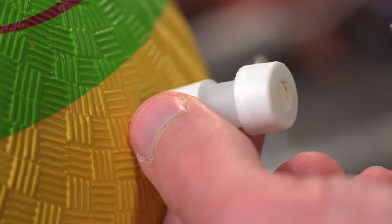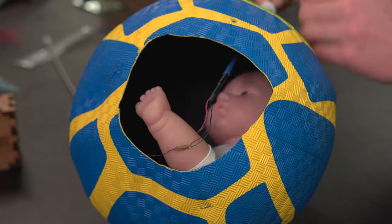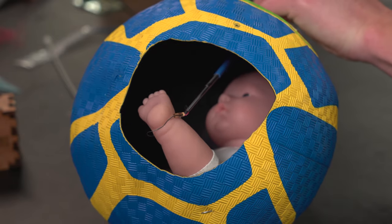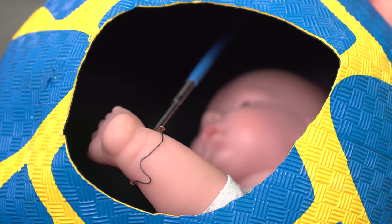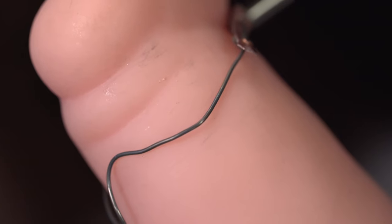So our device passes through this port, and then once in the womb, the nitinol reinforcement of our device expands into a loop, and the surgeon can then wrap the device around the fetal extremity and tighten it in order to monitor the fetus's blood oxygen.